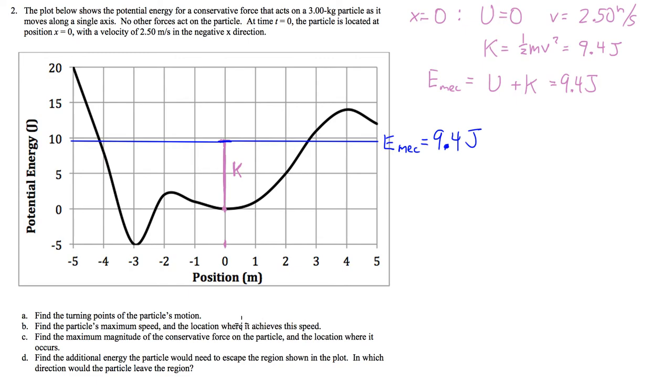So now let's see, you find the particle's maximum speed and the location where it achieves this speed. So in order to find the kinetic energy at any point, what we do is we take this EMEC line here and we go, let's say we want it right here, we go down and we measure how much the potential energy is below mechanical. And then we say this is our kinetic there because we take this equation here, right? EMEC equals U plus K. And then we find kinetic equals EMEC minus U. So this is EMEC here and this is U. So K is the difference between them.